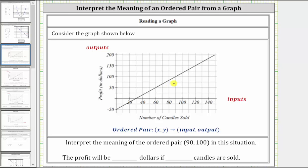We are asked to consider the graph below and interpret the meaning of the ordered pair (90, 100) in this situation. Remember, for any ordered pair, the first value is the input and the second value is the output. Graphically, inputs are always along the horizontal axis and outputs are always along the vertical axis.